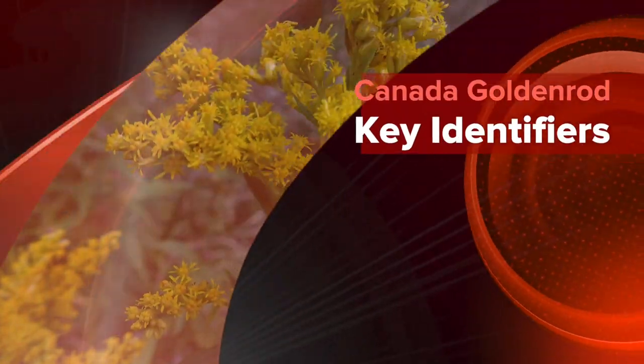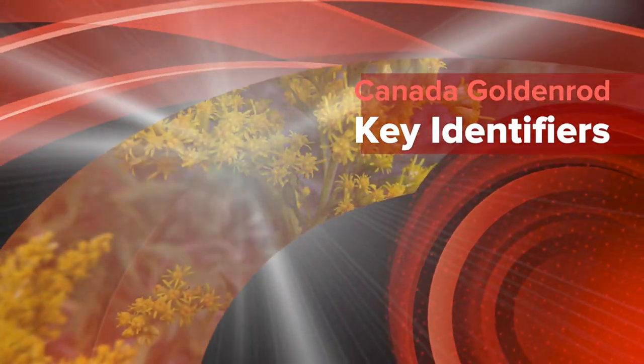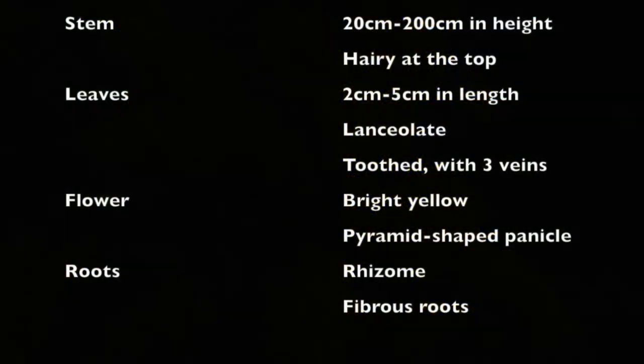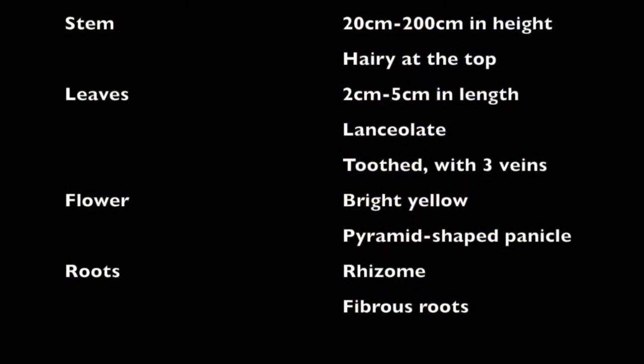To recap, the key identifiers of Canada goldenrod are: a stem 20 to 200 centimeters in height with toothed lanceolate leaves, yellow flowers arranged in a pyramid-shaped panicle, and a rhizome root system with fibrous roots.